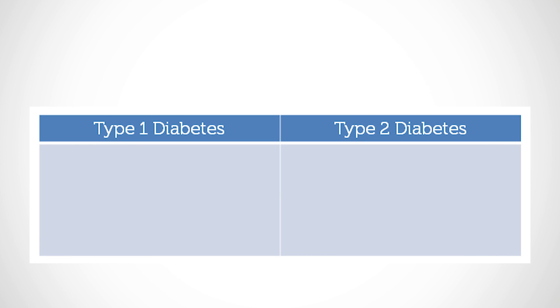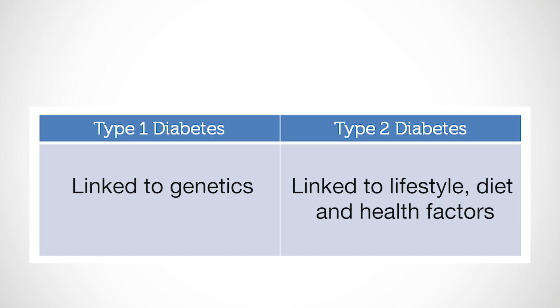The most common types of diabetes are types 1 and 2. Type 1 diabetes is linked to genetics, while type 2 diabetes is thought to occur due to a combination of genetic and environmental factors.